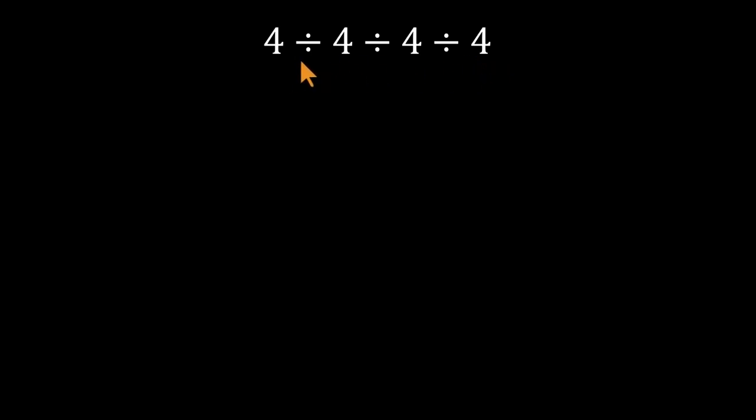Most people rush to an easy answer by pairing terms that were never meant to be paired. They take the first two, four divided by four, and get one.